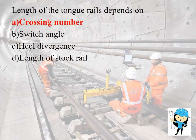The length of the tongue rail depends on the crossing number. The crossing number is defined as the number of rails crossing at a single point.